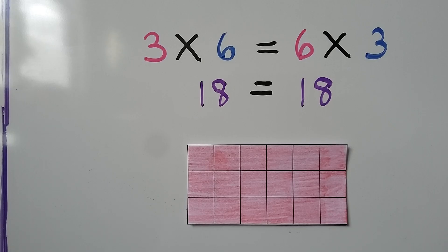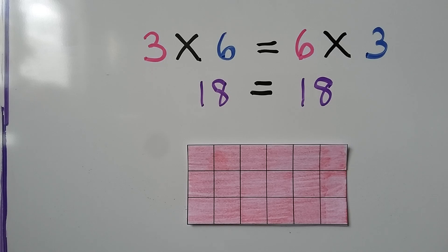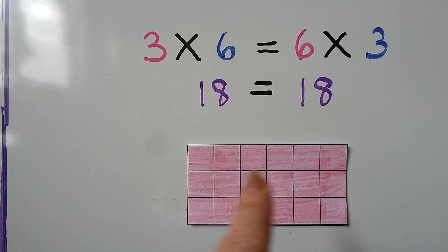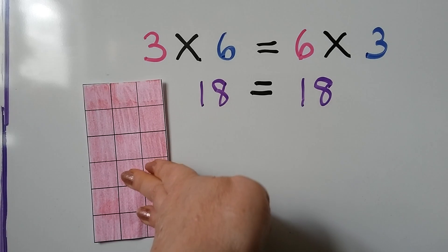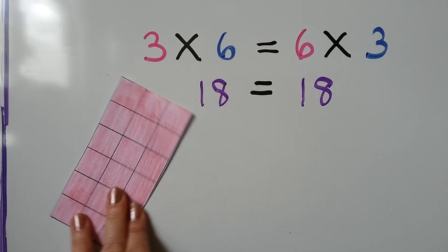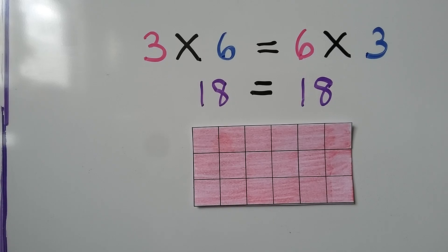Three times six is equal to six times three. This array shows three times six with three rows of six squares. I can turn this and make six rows of three squares — it's still 18 squares. So three times six is equal to six times three.